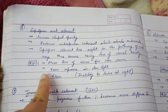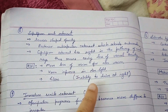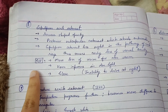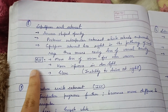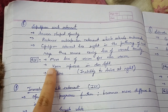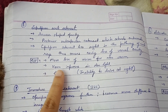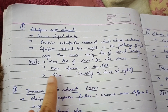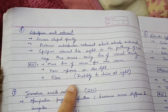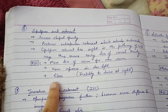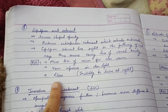Because cupuliform cataract lies in the pathway of axial rays, it leads to early loss of visual acuity. Clinical features of cupuliform senile cataract include greater loss of vision for near vision. Vision improves in dim light, and glare is seen. Glare is the inability to drive at night.